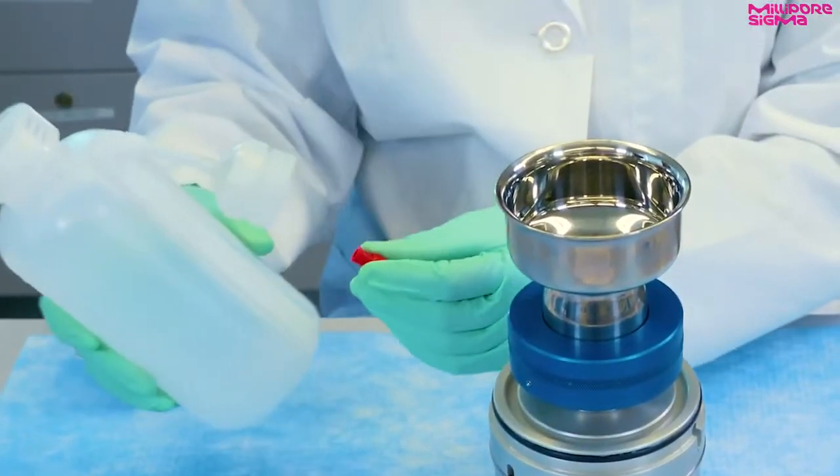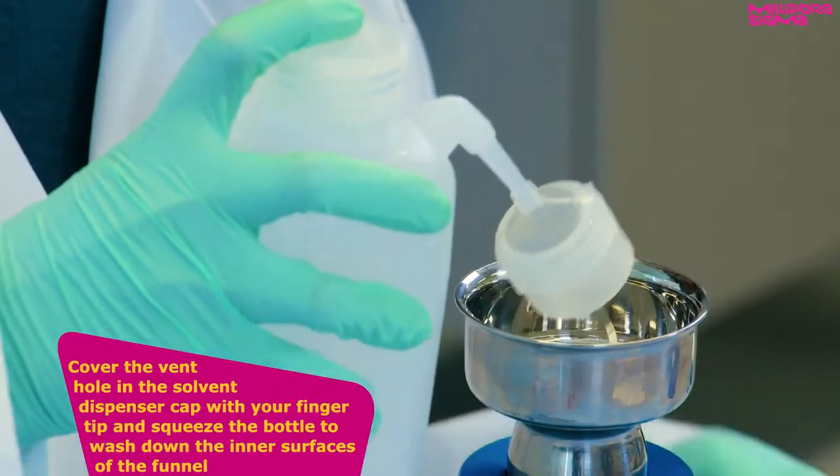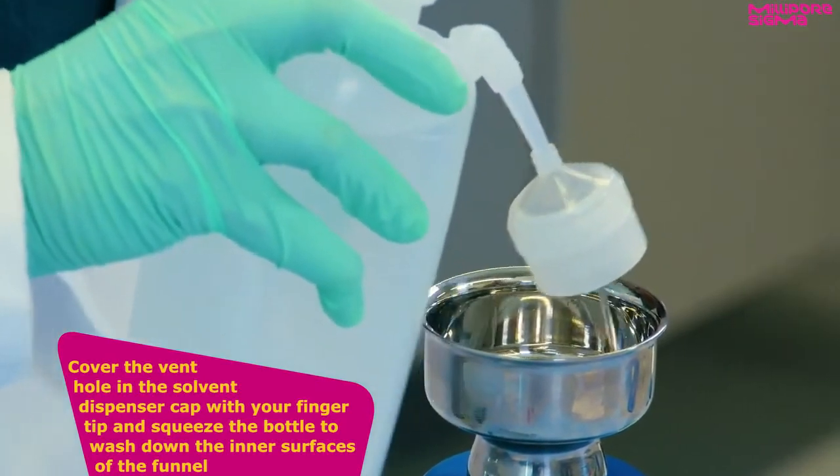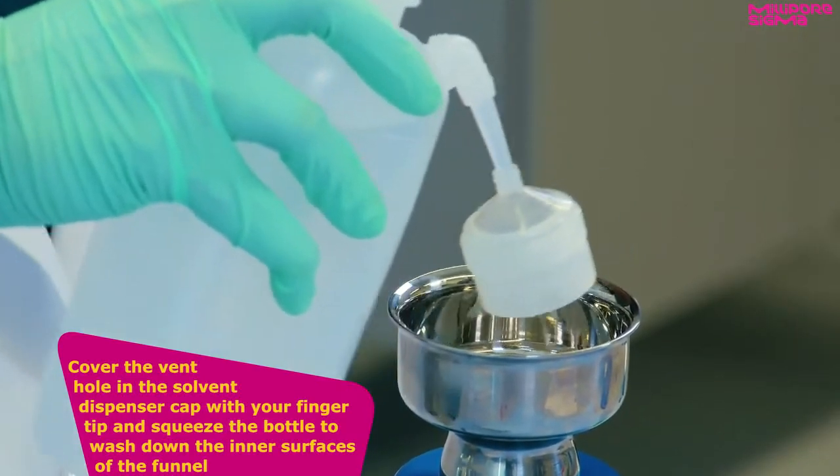Remove the red cap from the wash bottle. Cover the vent hole in the solvent dispenser cap with your fingertip and squeeze the bottle to wash down the inner surfaces of the funnel. Make sure to use enough solvent to wash all the contaminants into the flask.